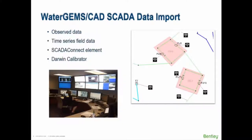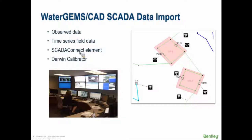Let's look at the first use case: bringing SCADA data into the model. We have several ways of doing this in WaterGems. We have observed data, where if you're in a graph you can point to observed data in a spreadsheet and bring it in. Time series field data is another way. These are older technologies. The big one to focus on today is the SCADA Connect element — those little black things that look like radio signals — where you place a model element that represents a SCADA signal. Darwin Calibrator also has ways to import SCADA data, but I'll focus on the SCADA Connect elements.